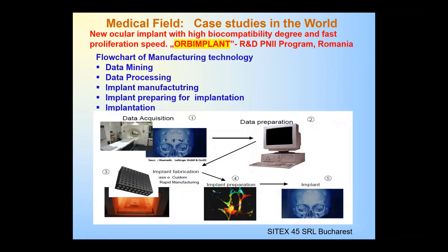We'll see one other application: the R&D project Orbin Plant, supported by a Romanian agency, referred to a new ocular implant with high biocompatibility and fast proliferation speed. Proliferation refers to the growth of new cells, blood vessels, etc. Listed here is the flowchart, starting from a computer tomograph scan, first for data, after transfer into a list of instructions, and then arriving at the final product which gives the information to the machine to realize the scaffold, personalized to the individual person.